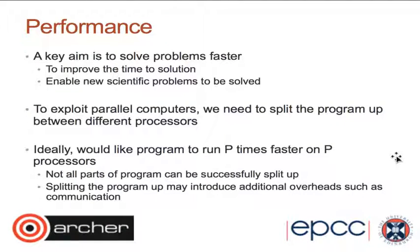Ideally, we would like our program to run p times faster on p processors. So if we have two processors, our problem should take half the time — a speedup of two. But not all parts of your program can be successfully split up, meaning we cannot parallelize every part of our problem. Furthermore, as we split up our program, the way we do it will introduce additional overheads. So it's really a balancing act.